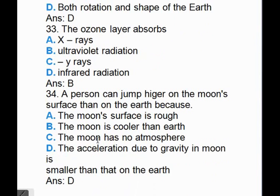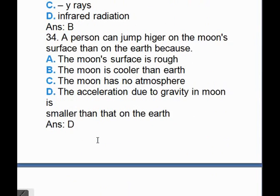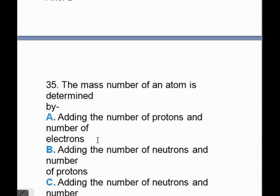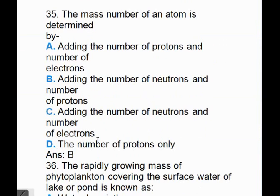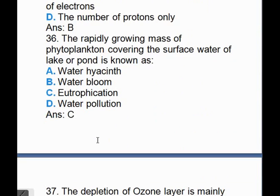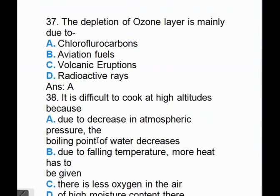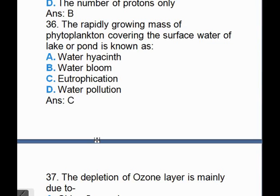A person can jump higher on the moon's surface than on Earth because, answer is D. The mass number of an atom is determined by B, adding the number of neutrons and number of protons. The rapidly growing mass of phytoplankton covering the surface water of a lake or pond is known as C, eutrophication. This is a very important question. The depletion of ozone layer is mainly due to, I think you know the answer, chlorofluorocarbons. A is the correct answer.